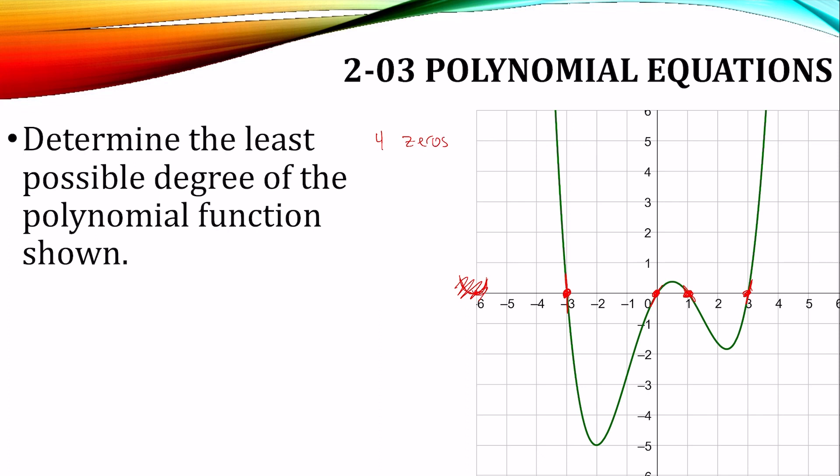And how many turning points? 1, 2, 3 turning points. So remember, the degree equaled the zeros, and the degree minus 1 equaled the turning points.